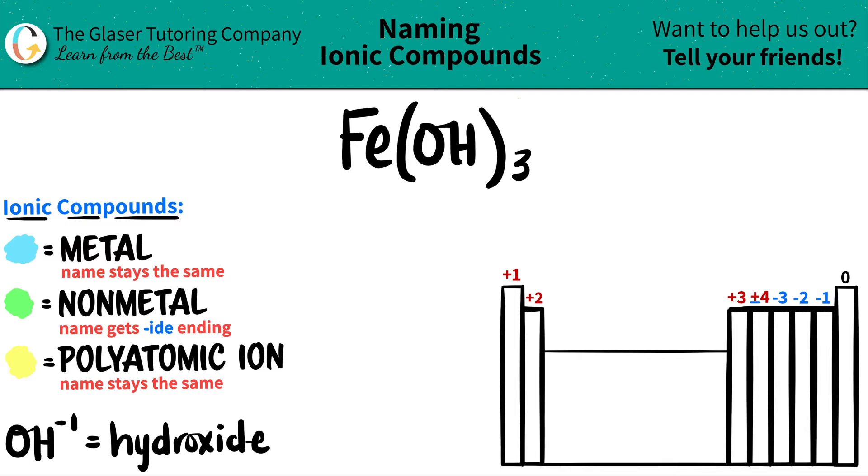Today we are going to be naming the ionic compound Fe(OH)3. Now here's a little trick. If you see that you have three different elements or three or more different elements in your compound, you know that you're dealing with at least one polyatomic. In this case we have the three elements.